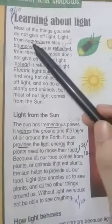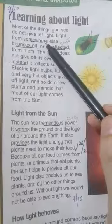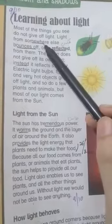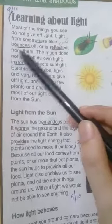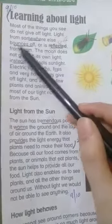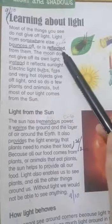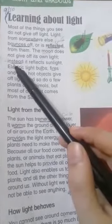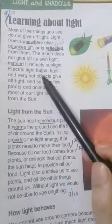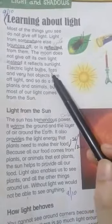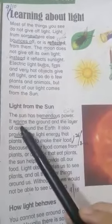Okay, read out the difficult words after me: somewhere, bounces off, reflected, instead, bulbs, fires, tremendous, warms, provides.